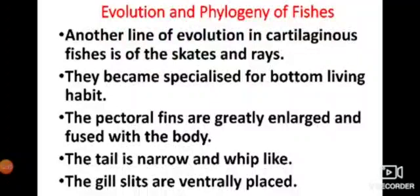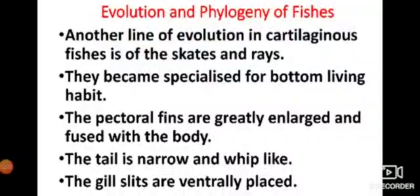In skates and rays, the pectoral fins are different from those of scoliodon — the pectoral fins are enlarged and fused to the body. The tail is narrow and whip-like. In sharks, the gill slits are laterally present, but in skates and rays the gill slits are ventral — ventrally located.